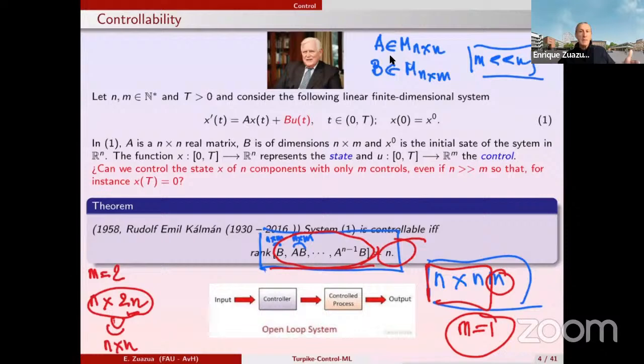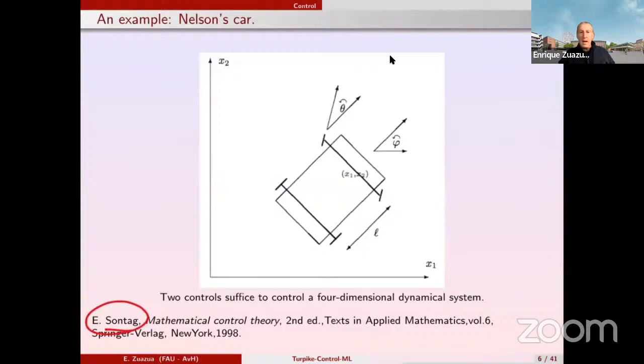Now, what Kalman said, listen, all this is totally characterized by this algebraic condition. When the rank of this matrix is n, this is done. You can guarantee the system is controllable, and if the rank is less, then the system is not controllable. So, a typical example is the Nelson car. This is described in this nice book of Eduardo Sontag, now 24 years old. I think it's freely downloadable from his webpage. And then here he talks about the Nelson car. I don't know whether Nelson was a mathematician or this was a brand of car or why he was calling it Nelson.